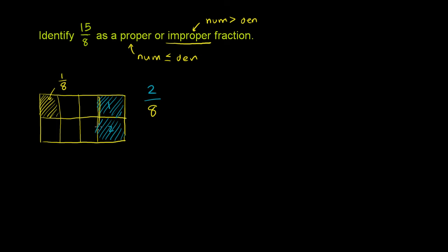These two right here are 2 eighths of the entire pie. Or another way to think about it, this is equal to two of these pieces. So you could say this is also equal to 2 times 1 eighth, because each of these boxes right here is 1 eighth.